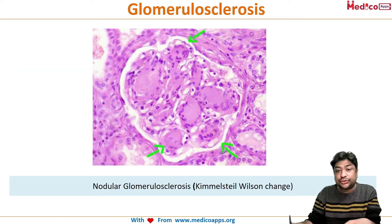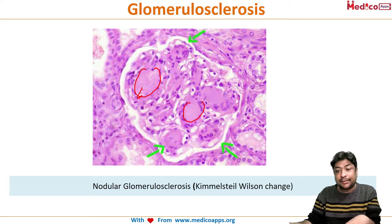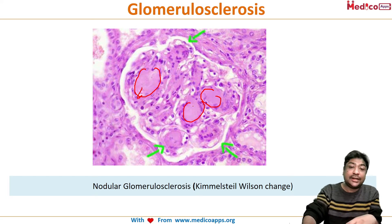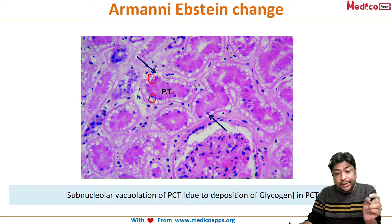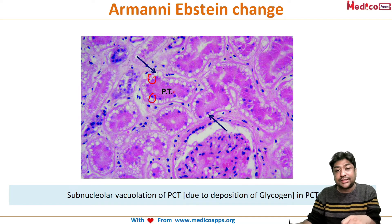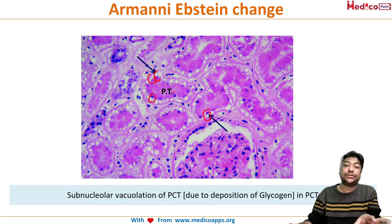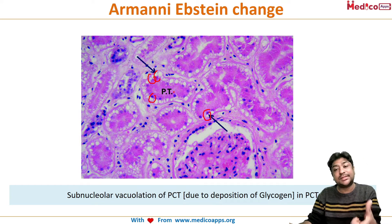On the biopsy slide, nodular glomerulosclerosis — also called Kimmelstein-Wilson disease — shows hyaline deposits, and is the most specific finding in diabetic nephropathy. The Armani-Epstein change shows sub-nuclear vacuolation of the proximal convoluted tubule cells, caused by deposition of glycogen in the proximal convoluted tubule. This is very specific to diabetic nephropathy.